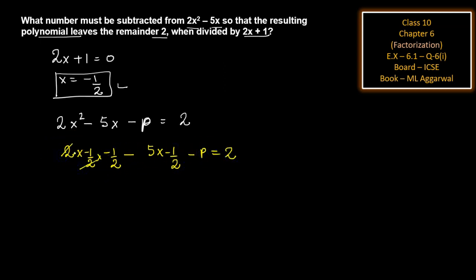Simplifying: -1/2 + 5/2 - p = 2. This gives us (5 + 1)/2 - p = 2, so 6/2 - p = 2.